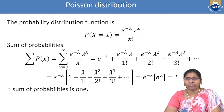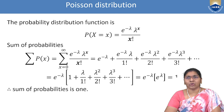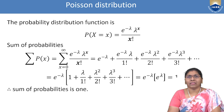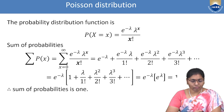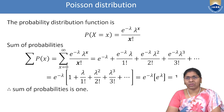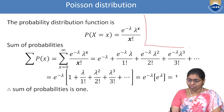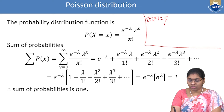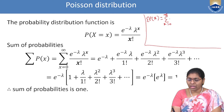The probability distribution function is P(X = x) = e^(−λ) · λ^x / x!. To show the sum of probabilities equals 1, we consider the summation from x = 0 to infinity of e^(−λ) · λ^x / x!. Substituting x = 0, 1, 2, 3, and so on gives individual terms.